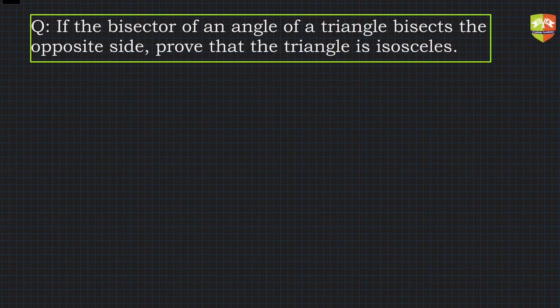Hello and welcome to another problem-solving session on triangles. We are solving problems related to internal angle bisector theorem. Let's go through this particular problem: If the bisector of an angle of a triangle bisects the opposite side, prove that the triangle is isosceles. Let's first draw a triangle.